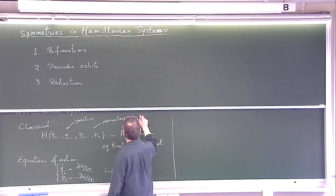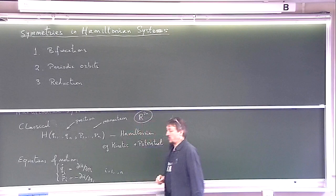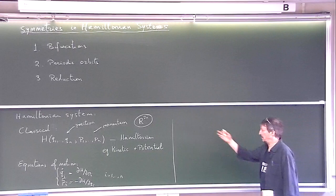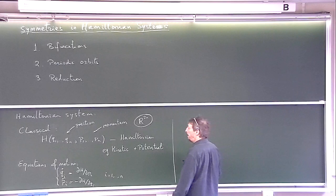This is 2n variables. So the phase space is R2n. There are many examples where the phase space is not a vector space, but it's a manifold, and we'll see some examples later on.